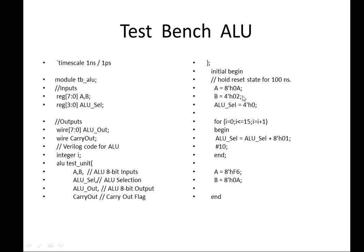This is how to provide test vectors for the ALU — three inputs, that is A, B, and the select line — using a for loop. Depending on your ALU bit width, you can change values accordingly. This is the model for the ALU test bench. Thank you, please like, share, and subscribe to my channel.